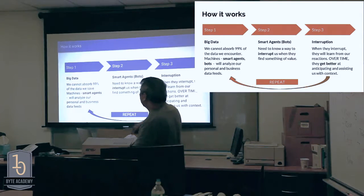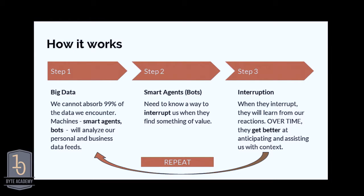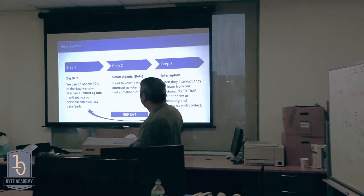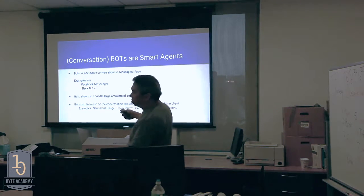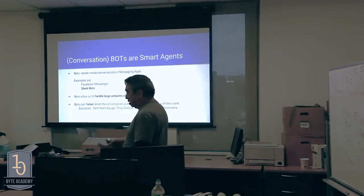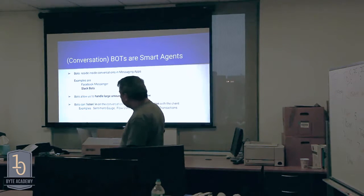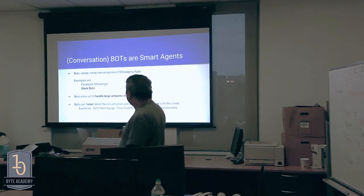We can't absorb 99 percent of the data we see, so smart agents analyze our personal and business data feeds. These bots interrupt us and over time they get better at anticipating and assisting us with context. We just repeat the process with lots of smart agents and Slack bots. The stuff sitting inside Slack can be made intelligent and handle intelligence through a conversational flow.